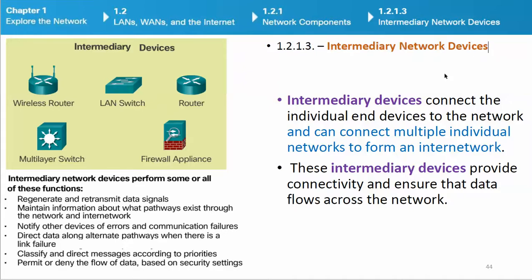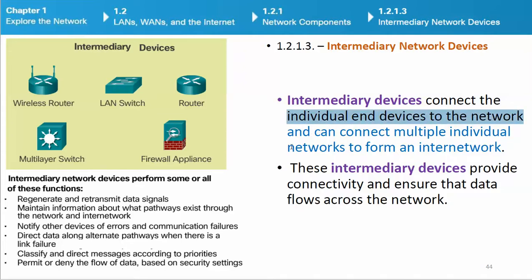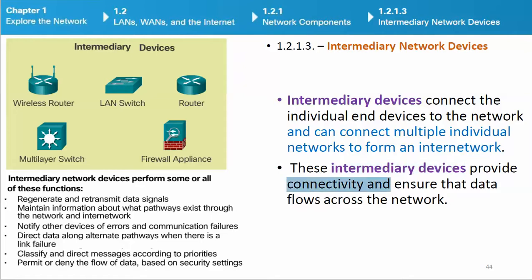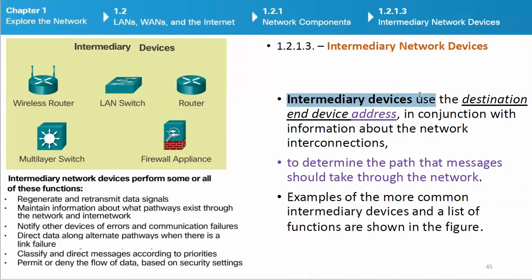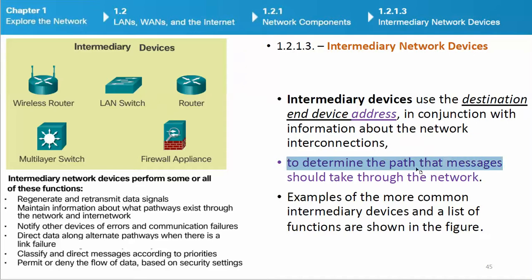Intermediary devices connect the individual end devices to the network and can connect multiple individual networks to form an internetwork. These intermediary devices provide connectivity and ensure that data flows across the network. Intermediary devices use the destination end device address, in conjunction with information about the network interconnections, to determine the path that messages should take through the network.